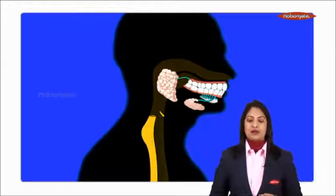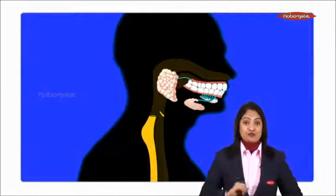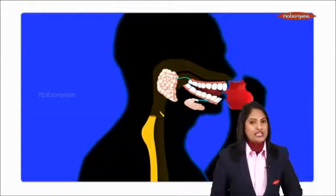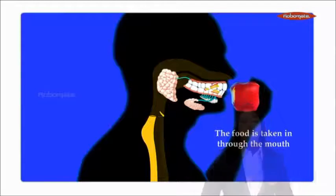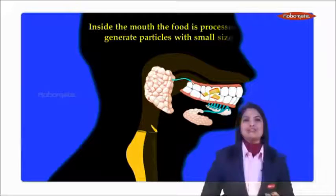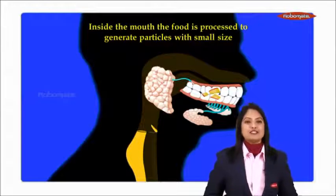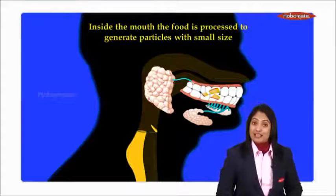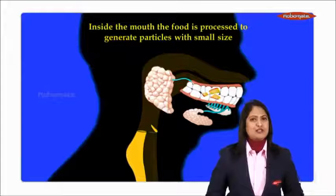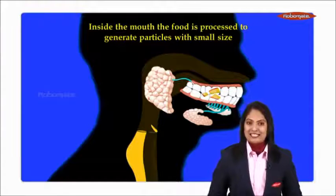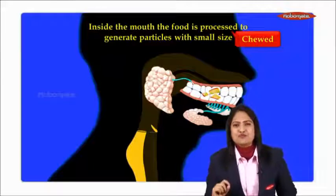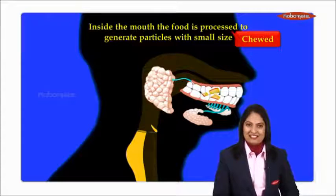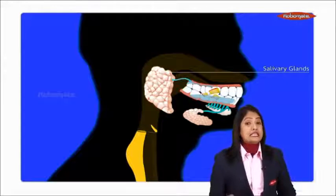Now we begin with the process of nutrition in the mouth. We eat food in the form of tiny morsels — tiny bites. Once inside the mouth, the food is processed to generate particles with small size. The natural mixers present in the mouth, called teeth, do the process of chewing, by which the food we eat is broken down into particles with small size.